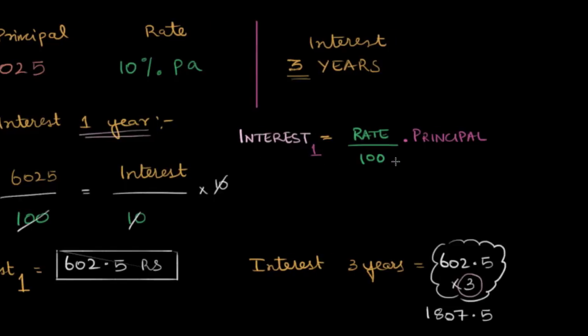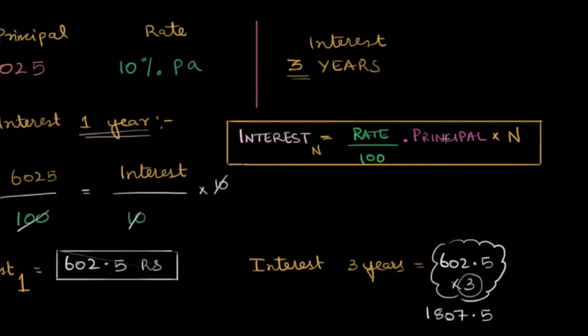Now if you want it for many years, what should you do? Nothing. All you have to do is multiply with the number of years you want. In this case, if it's three, it's three. If it's four, it's four. If it's N, it's N. So the interest at the end of N years of holding something will be the rate divided by 100 multiplied by the principle multiplied by the number of years you want. And this is the famous or infamous PNR by 100, or PRT by 100 formula for the interest, the simple interest after N years. But you now know exactly why it works.